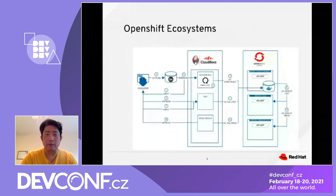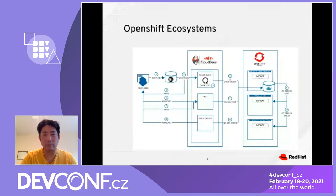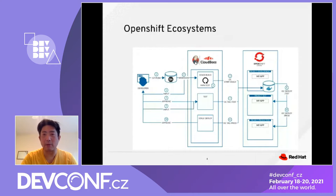In general, OpenShift has an ecosystem where when you commit your code into Git, it will trigger a webhook into Jenkins, Tekton, or a CI/CD pipeline that will start the build process, start the test, and then kick off the deployment to deploy to Dev, QA, and production. This is a high-level picture of what OpenShift does.